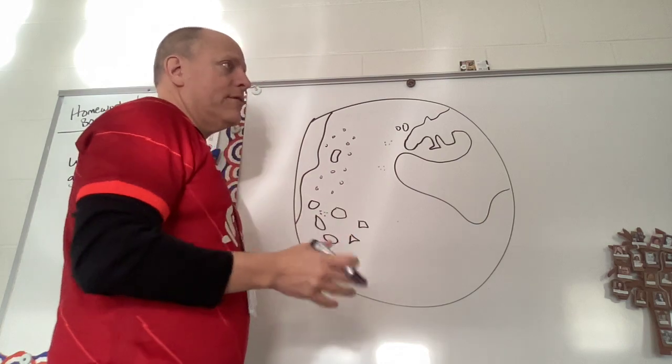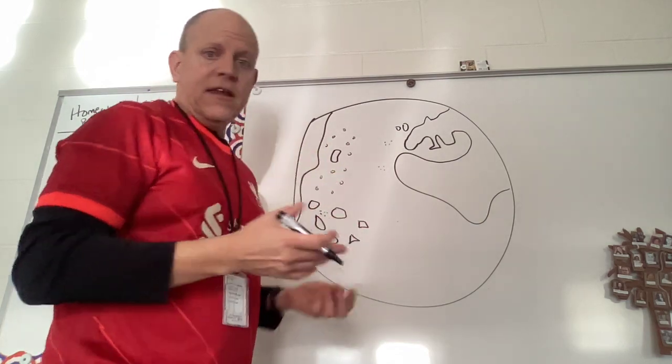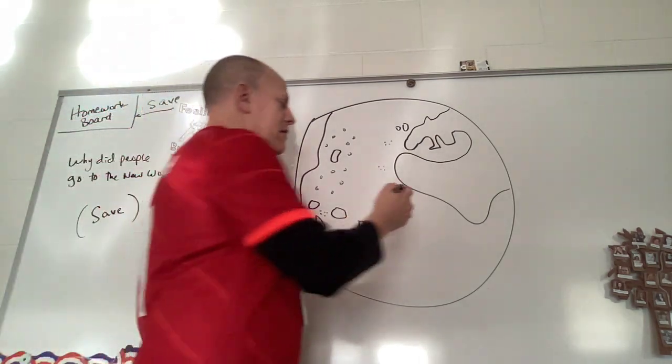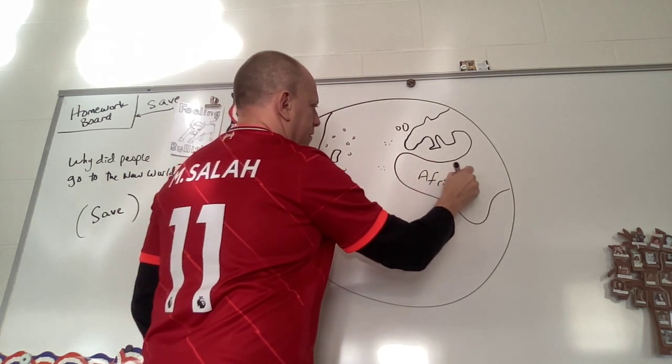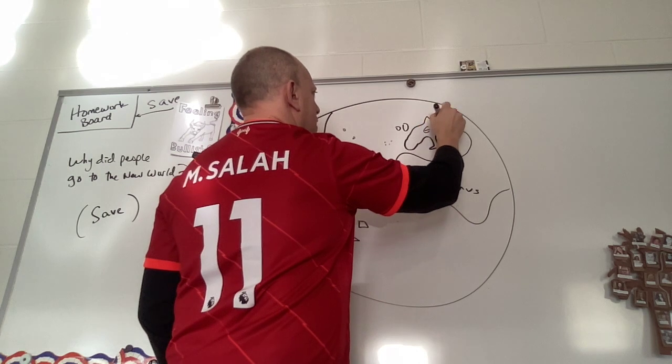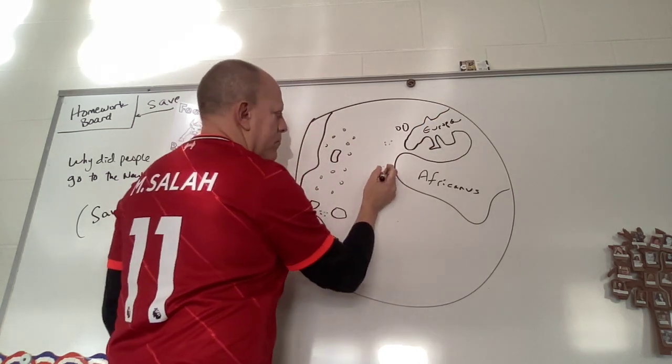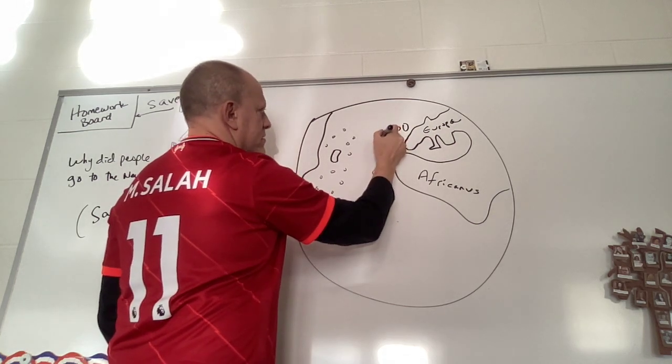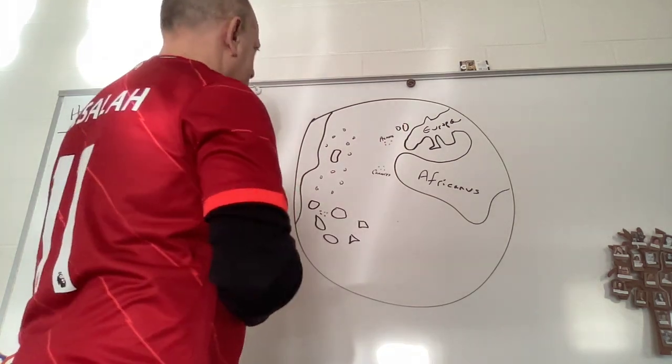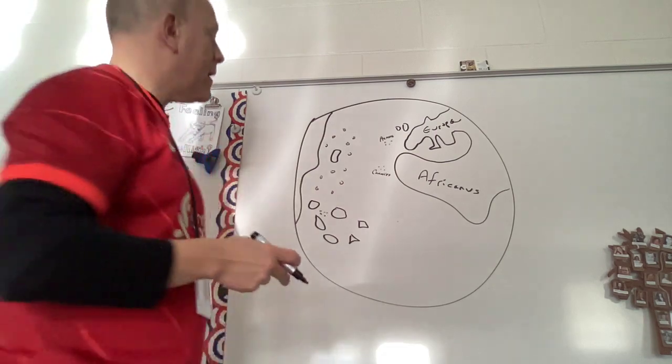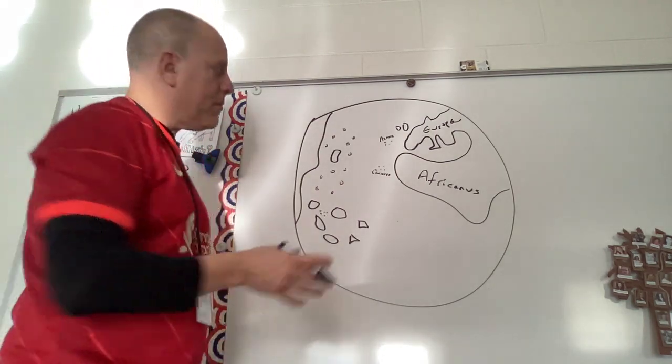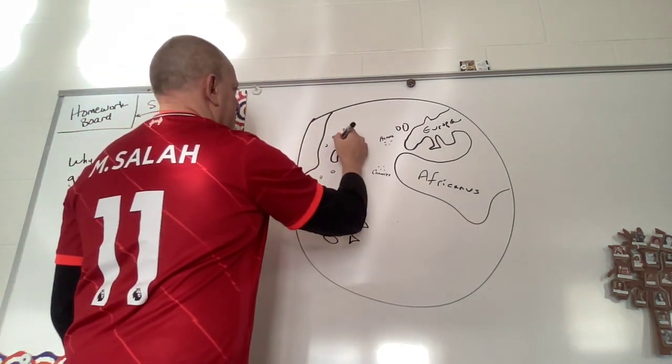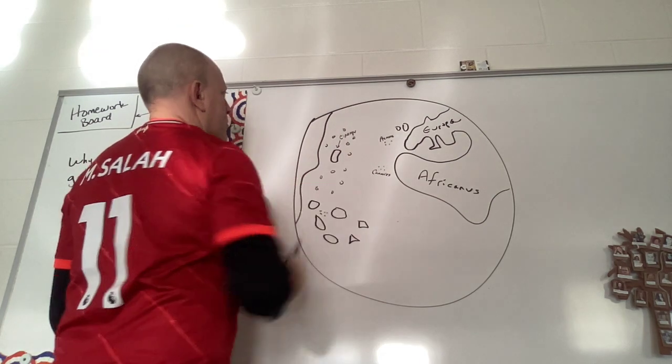So now we gotta label it. And they thought the world at that time, they just knew of three continents. They did not know about Antarctica. They did not know about Australia or the Americas, apparently. So they knew about Africa. I want to do this in a little bit of Latin here. Africanus, Europa. And then we're gonna identify these islands. These are Canaries. And these are Azores off the coast of Europe and Africa.